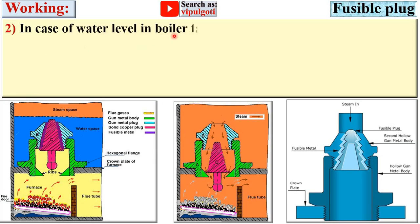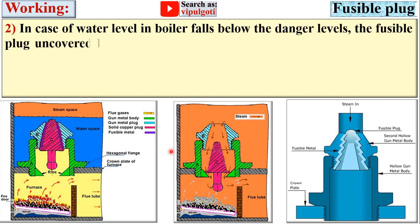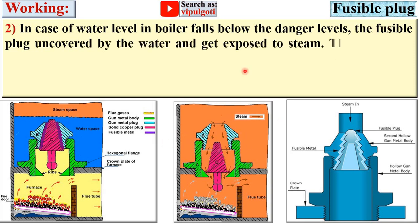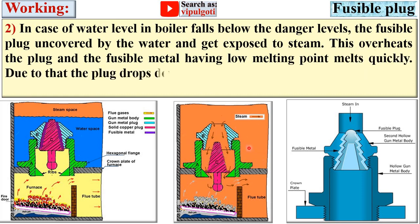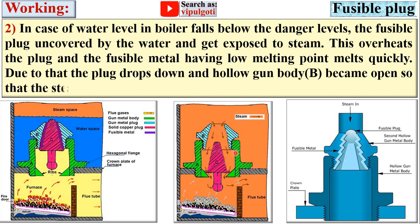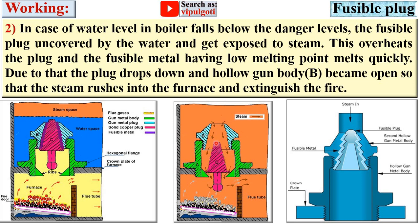In case the water level in the boiler falls below the danger level — here you can see the water level falls below the danger level — the fusible plug becomes uncovered by water and gets exposed to steam directly. This overheats the plug and the fusible metal, having a low melting point, melts quickly. As a result, the plug drops down and hollow gun metal body B becomes open, so that steam rushes into the furnace and extinguishes the fire, providing safety to the boiler.